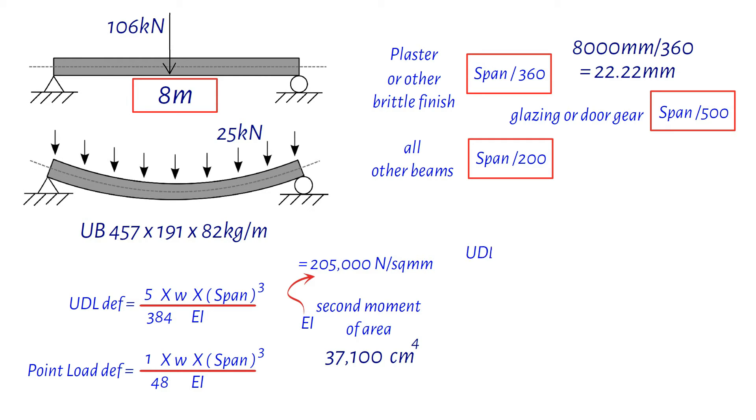For the UDL, start with 5 divided by 384 and multiply that by 25 kilonewtons. Remember to multiply by 1000 to convert it to newtons. Next, multiply by 8,000 millimeters cubed. Now, divide all of that by 205,000 newtons per square millimeter.